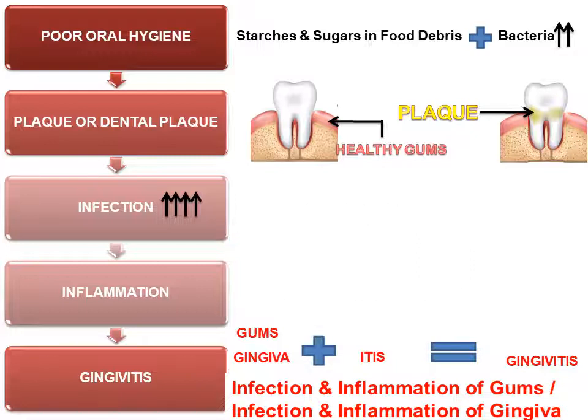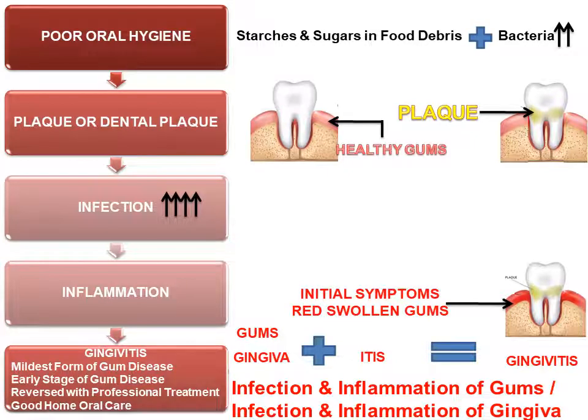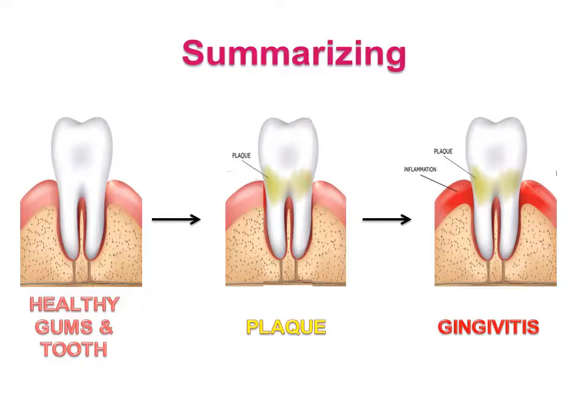The initial symptoms of gingivitis are red, swollen gums. Gingivitis is the mildest form and earliest stage of gum disease. Gingivitis can be reversed with professional treatment and good home oral care — it can be easily managed, prevented, and treated. So far we have learned about healthy gums, how plaque is formed, and how plaque progresses to develop gingivitis.